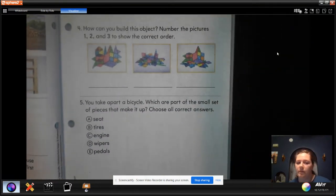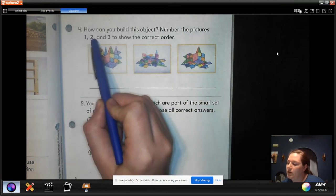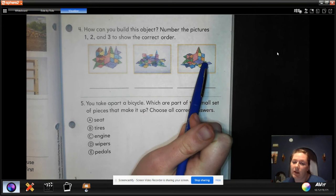Look at number four. How can you build this object? Number the pictures one, two, and three to show the correct order. So they kind of mixed up the steps.